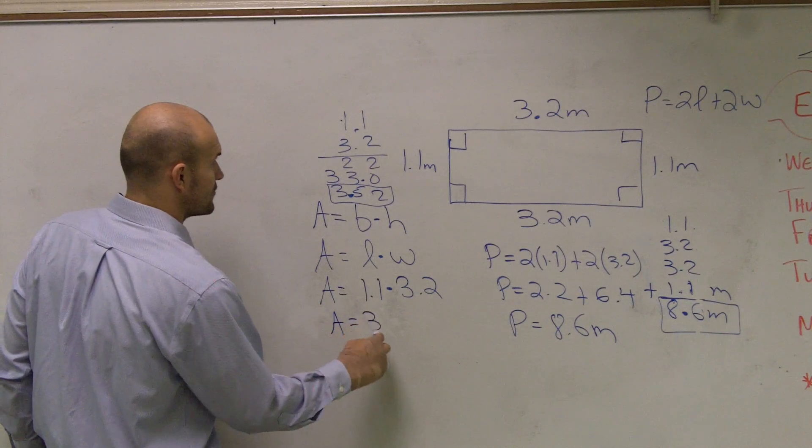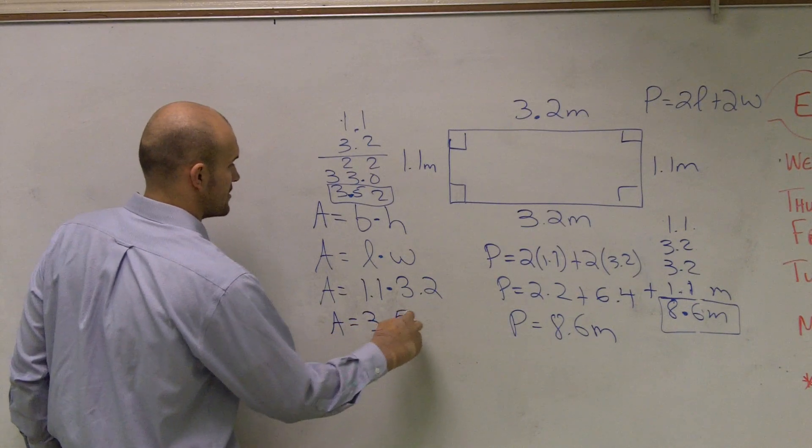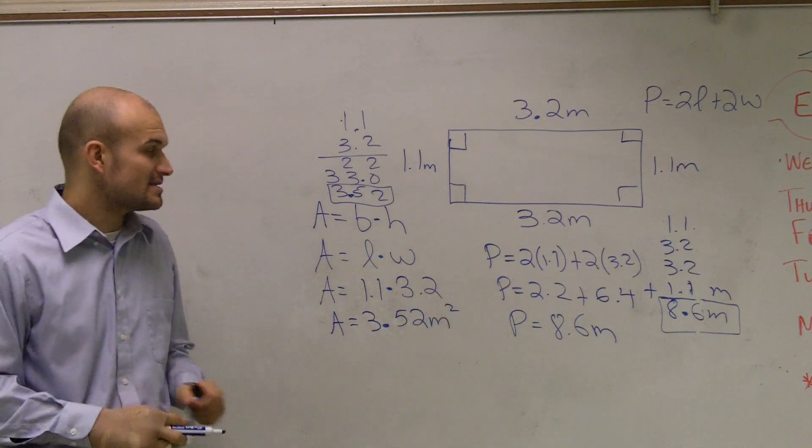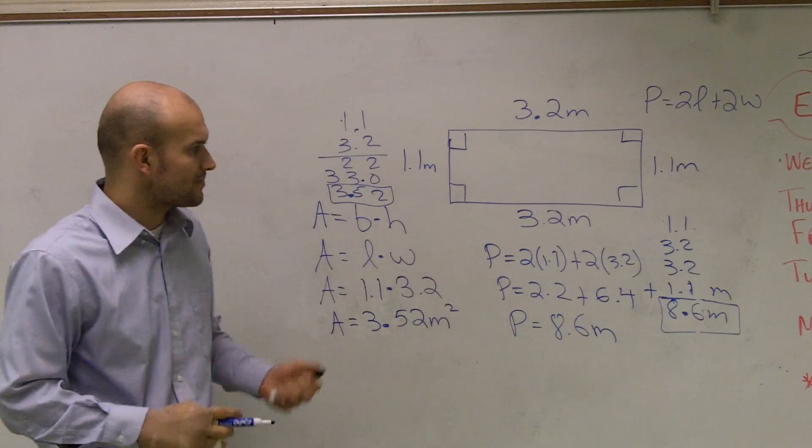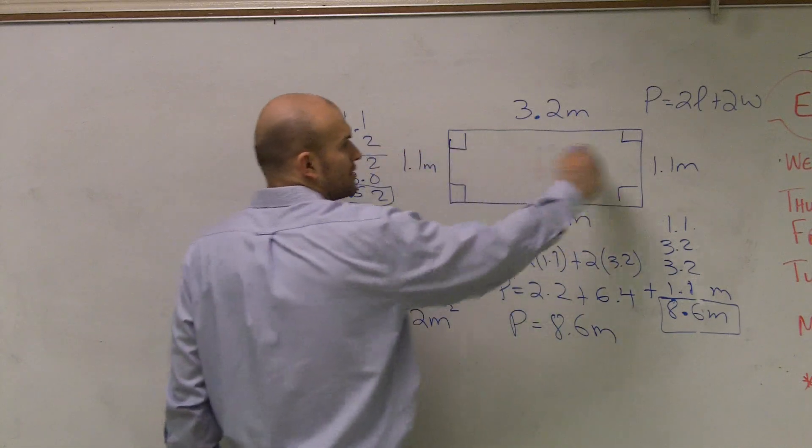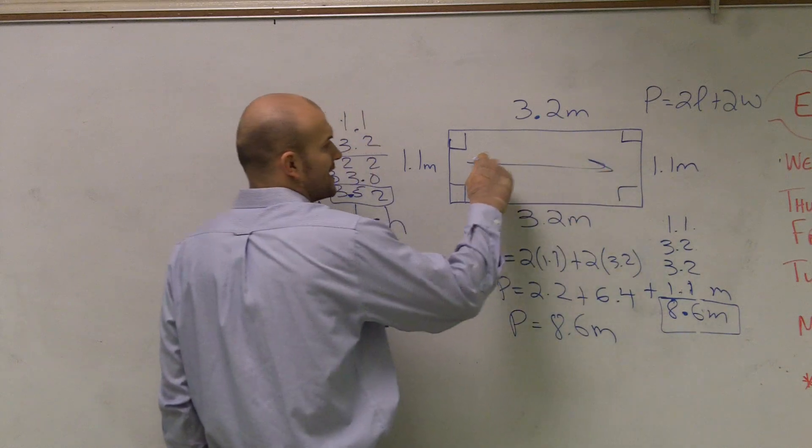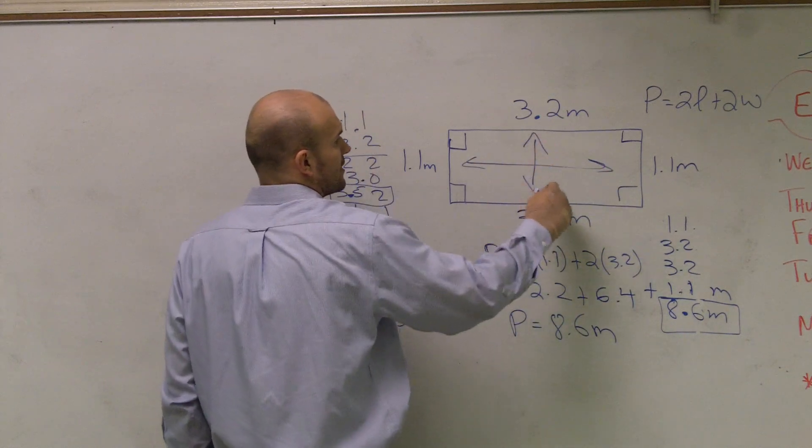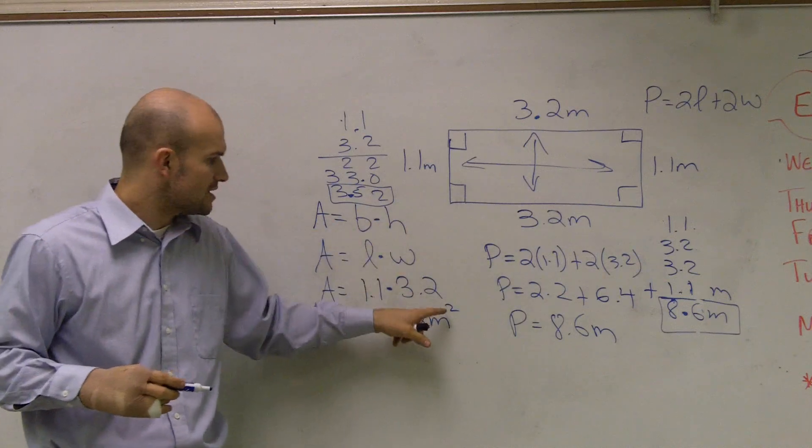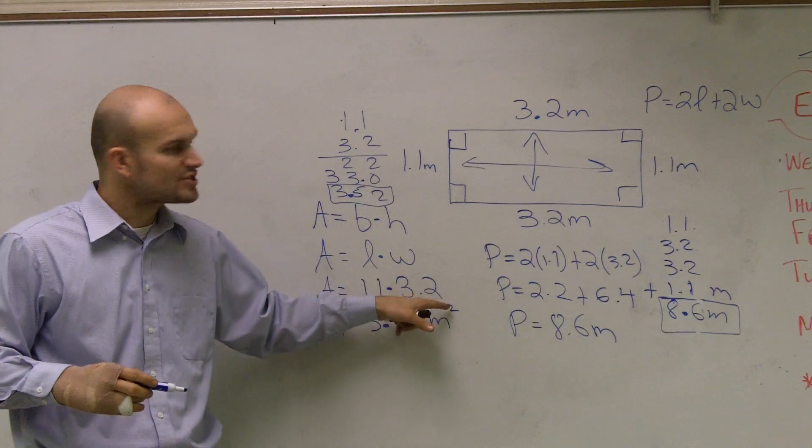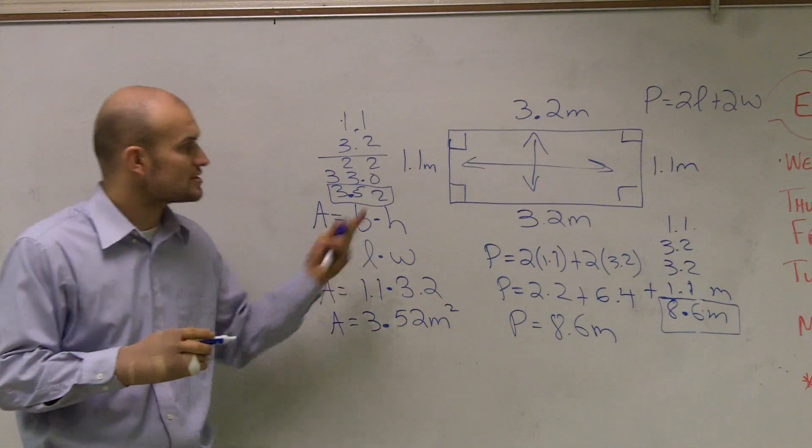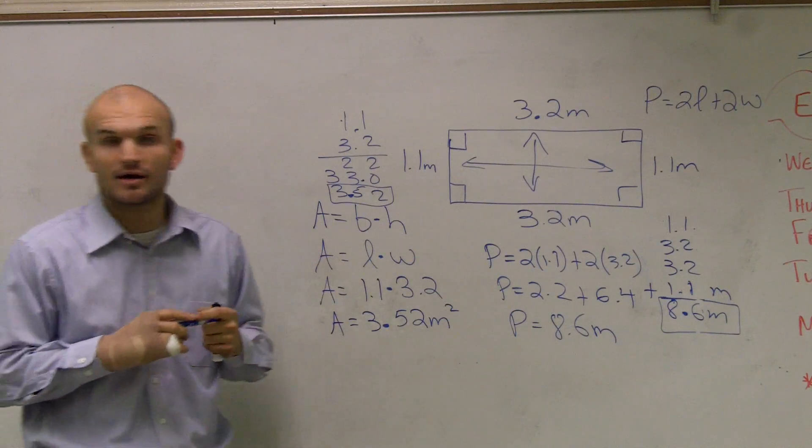So I say area equals 3.52 meters squared. And the reason why I say meters squared is if you guys look at perimeter, it's in only one dimension. However, area, we're dealing with length and width and height. So therefore, we're going in two different dimensions. So therefore, my meters is going to be squared, meaning we're working with our length in two different dimensions. So that's how you find the area and the perimeter of a rectangle.